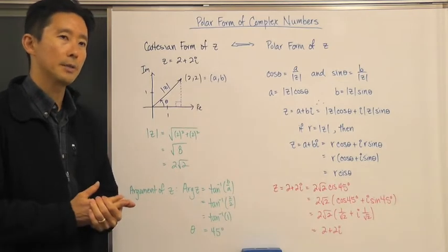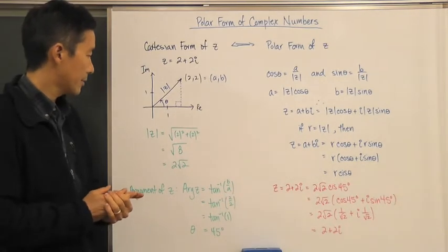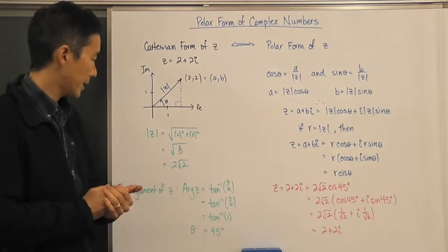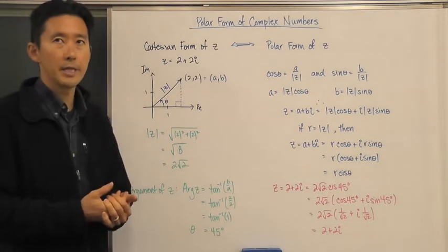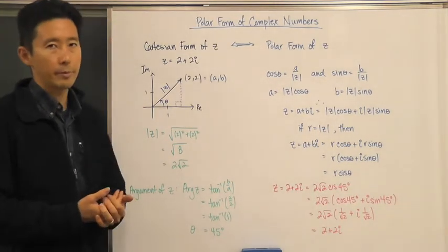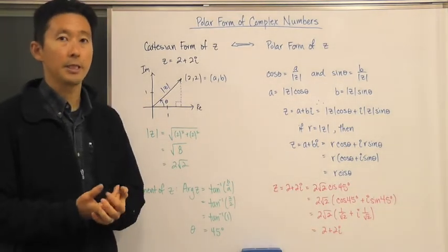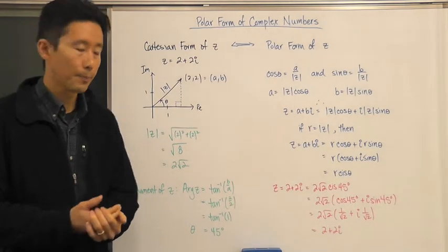The next thing we need to look at is: what is the argument of Z? The argument of Z is actually going to represent the direction as an angle.